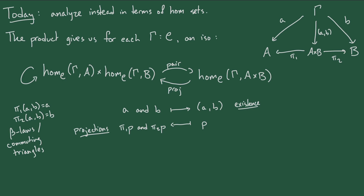If you started at the right with a morphism from gamma to A times B, then went to the left and back to the right — post-composing by both projections and then pairing those back up — you might recognize that as the eta law of products. This round trip is the identity due to the uniqueness condition on the universal property: there's exactly one such map that makes these triangles commute, and both P and the pairing of pi 1 of P and pi 2 of P make these triangles commute. Therefore, they're equal.